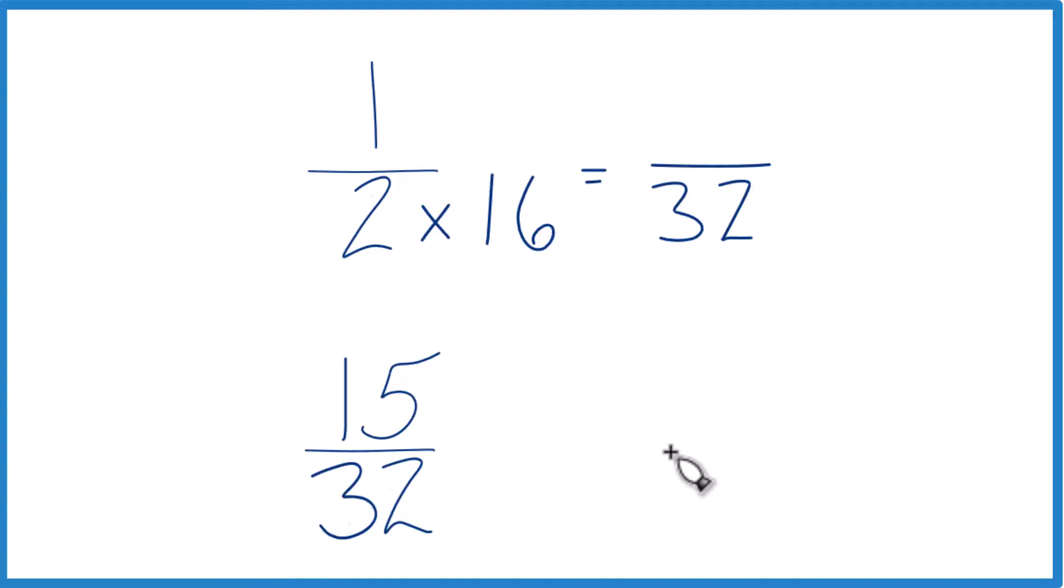And then down here, we already have 32. So let's just bring 15 32nds across. And now we have the same denominators, but we can't just multiply 2 by the 16. We need to multiply the numerator by 16 as well.